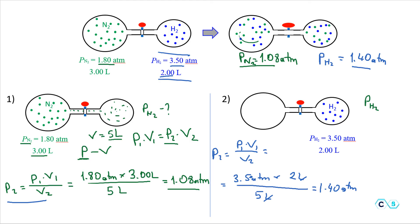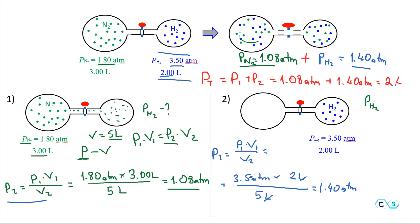In order to find the total pressure we need to add these two partial pressures together. In this new system we use Dalton's Law, which states that the total pressure equals P₁ + P₂. So for nitrogen and hydrogen we simply add: 1.08 + 1.40 = 2.48 atm. The final total pressure is 2.48 atmospheres.